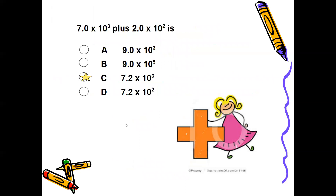Here are a couple of practice examples. In the first one, the numbers have different exponents and we're adding. Using the smaller exponent — which is 10 to the 2nd — decrease 10 to the 3rd to 10 to the 2nd and move the decimal one place to the right, making 7 become 70. Adding 70 plus 2 gives 72 × 10². Since 72 is not in scientific notation, move one place left, add 1 to the exponent: the answer is 7.2 × 10³, which is answer C.